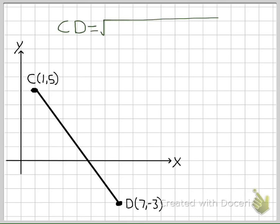I again use the distance formula, and just to help, I'm going to label x1, y1, x2, y2. And I get 7 minus 1 squared plus negative 3 minus 5 squared.